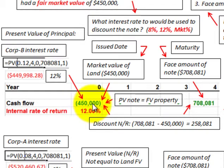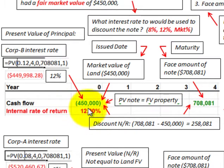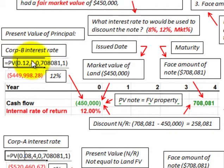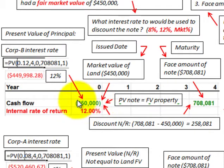We have to equate the present value of this note to the fair market value of the land at its issue date, which is $450,000. At the fourth year when this note matures, the face amount is $708,081. Putting that into our calculator for our cash flow, we determine that the internal rate of return on this cash flow is 12%. We can determine that the present value of the note equals the fair market value of the property. Discounting the $708,081 principal at 12% for four years, the present value is $449,998, which approximates the market value of the land at $450,000.